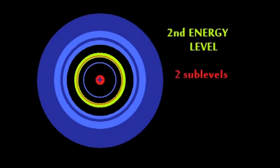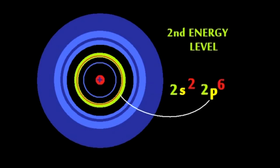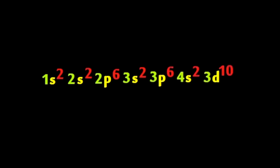the second shell, two sub-levels therein do dwell, and s sub-level holds 2 and p holds 6 for free if that's okay with you. 1s², 2s², 2p⁶, 3s², 3p⁶, 4s², 3d¹⁰.